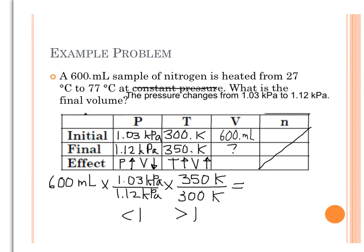So I'm going to take 600 times 1.03 times 350 divided by 1.12 and divide it by 300. And when I do that, my unrounded answer is 643.75.